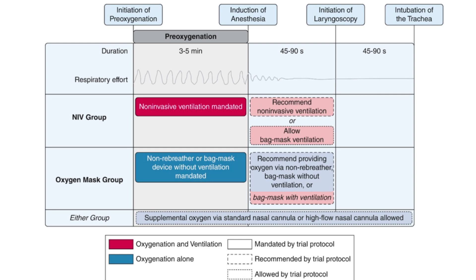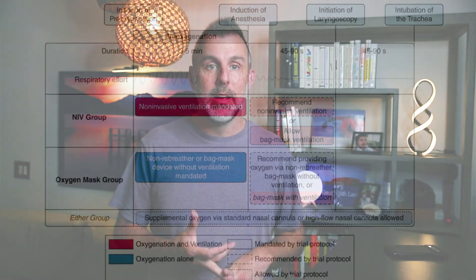This is a pragmatic trial, so airway management wasn't strictly controlled. But reading through the manuscript, they made a number of recommendations that are very reasonable. Face mask was with flush rate oxygen; nasal cannula for apneic oxygenation was allowed; bagging during the apneic period was allowed. These patients look like the kind I tend to intubate in the ED — mean age 61, half presenting in hypoxic respiratory failure. Almost all intubations were done by residents or fellows with a median of 50 prior intubations, so these aren't pure novices.